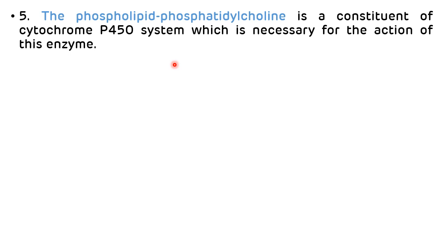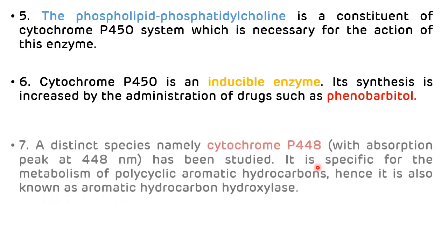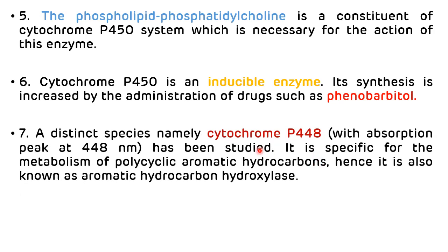Cytochrome P450 is an inducible enzyme. The concentration and activity of this enzyme can increase by the administration of various drugs like phenobarbital. A distinct species, namely cytochrome P448, has been studied. It is specific for the metabolism of polycyclic aromatic hydrocarbons and is hence also known as aromatic hydrocarbon hydroxylase. It is called cytochrome P448 because it gives an absorption peak at 448 nanometer wavelength.